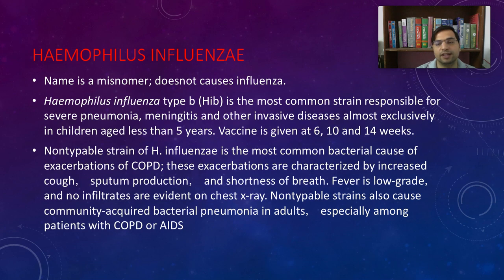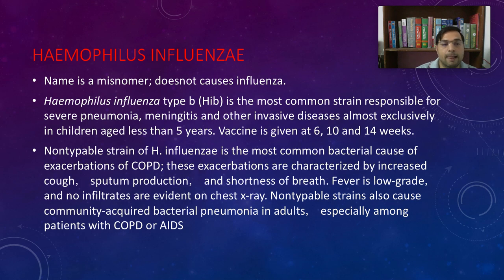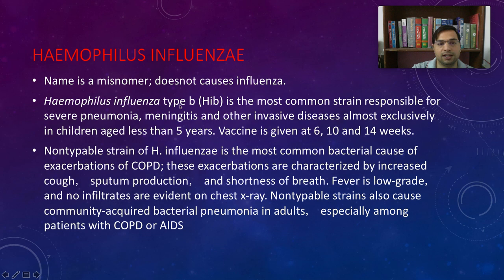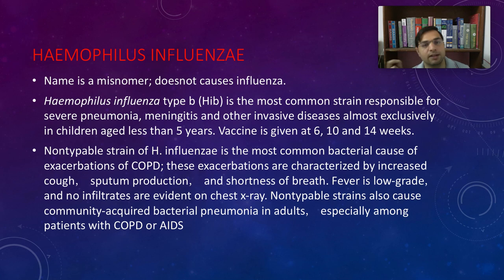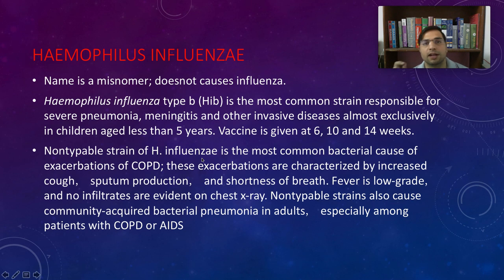Haemophilus influenzae — this bacteria sounds like influenza but has nothing to do with the influenza virus. Haemophilus influenzae is the most common strain responsible for severe pneumonia, meningitis, and other infections. We give the HIB vaccine — Haemophilus influenzae type B — at 6 weeks, 10 weeks, and 14 weeks of age. It is a gram negative bacteria, not a virus.